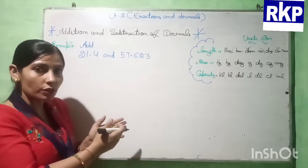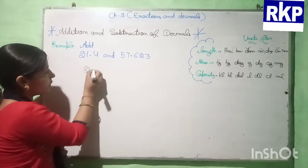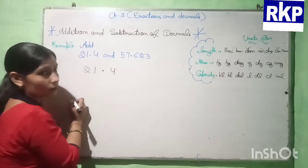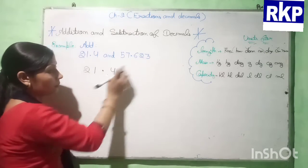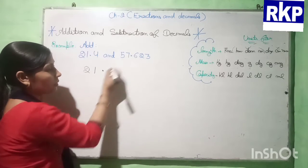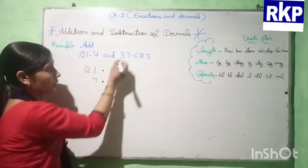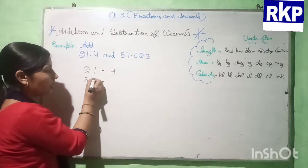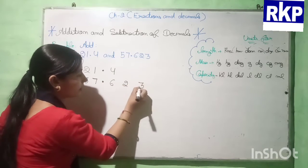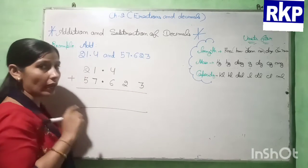First of all, we have to arrange these according to column and then we have to add. So first we will write 21.4. Now we have to write this number below it. First we will put the decimal point, and before the decimal point we have 7 then 5. After the decimal point we have 6, then 2, then 3. So first we arrange like this and then we add.